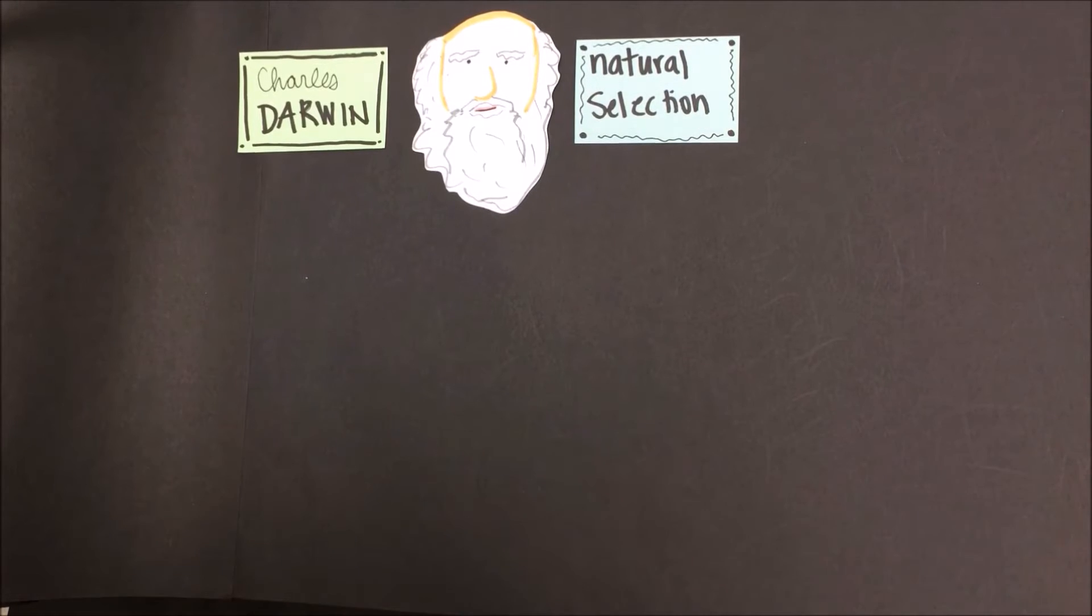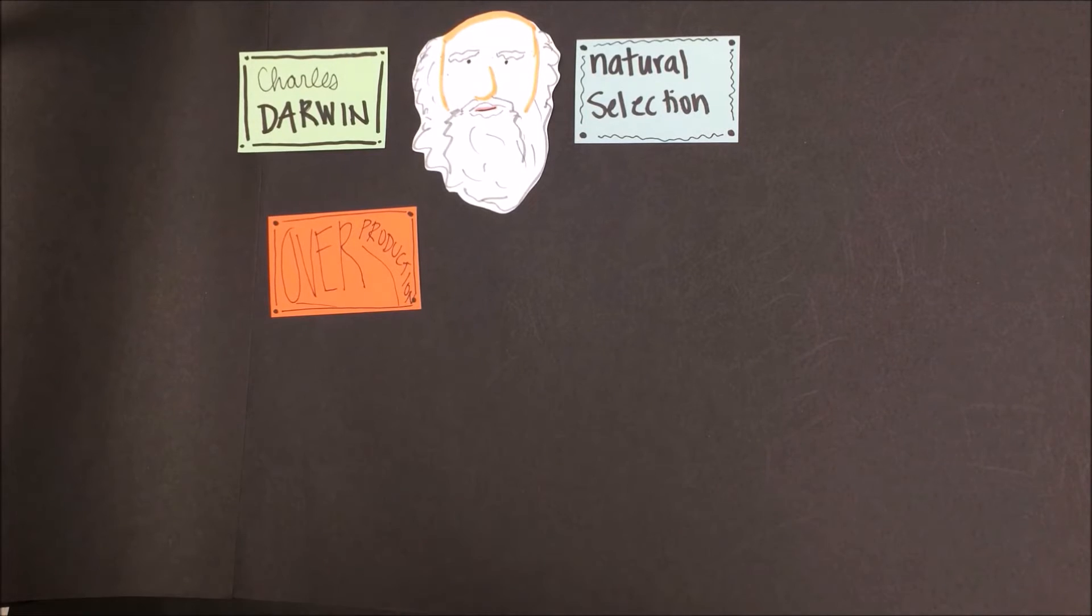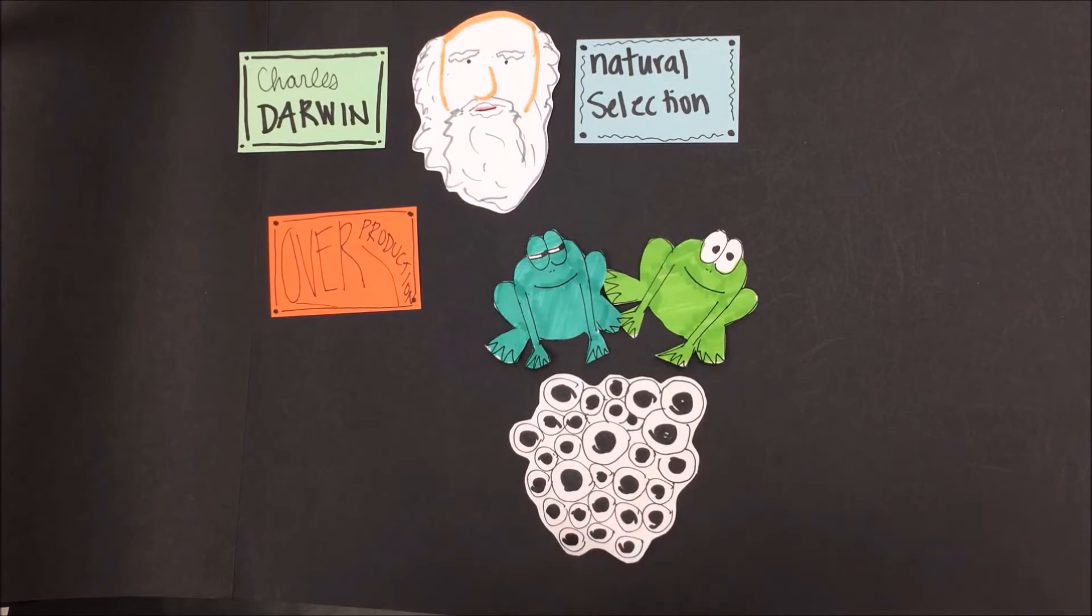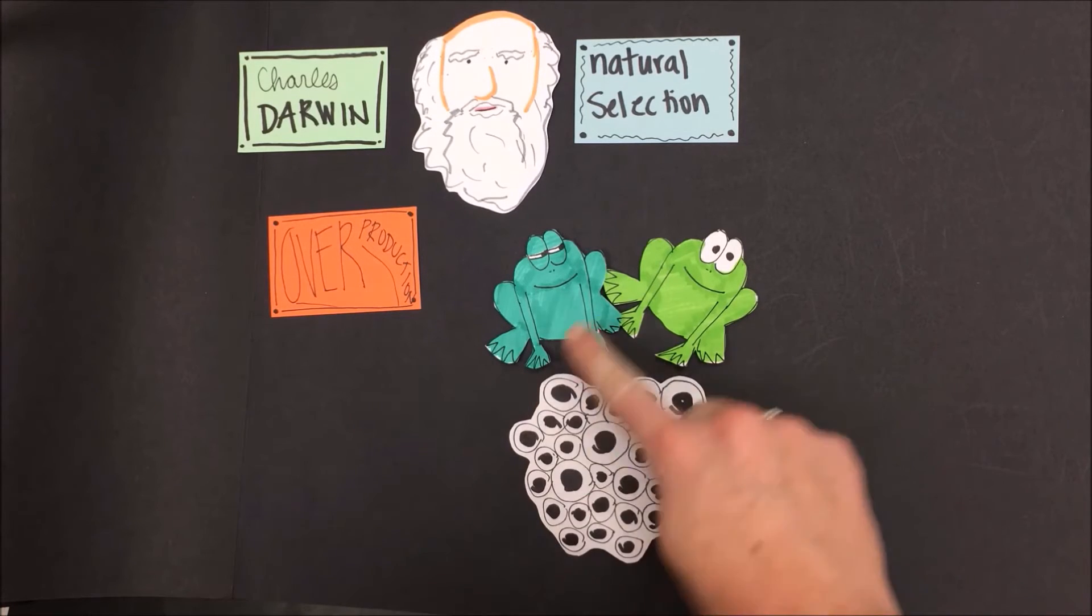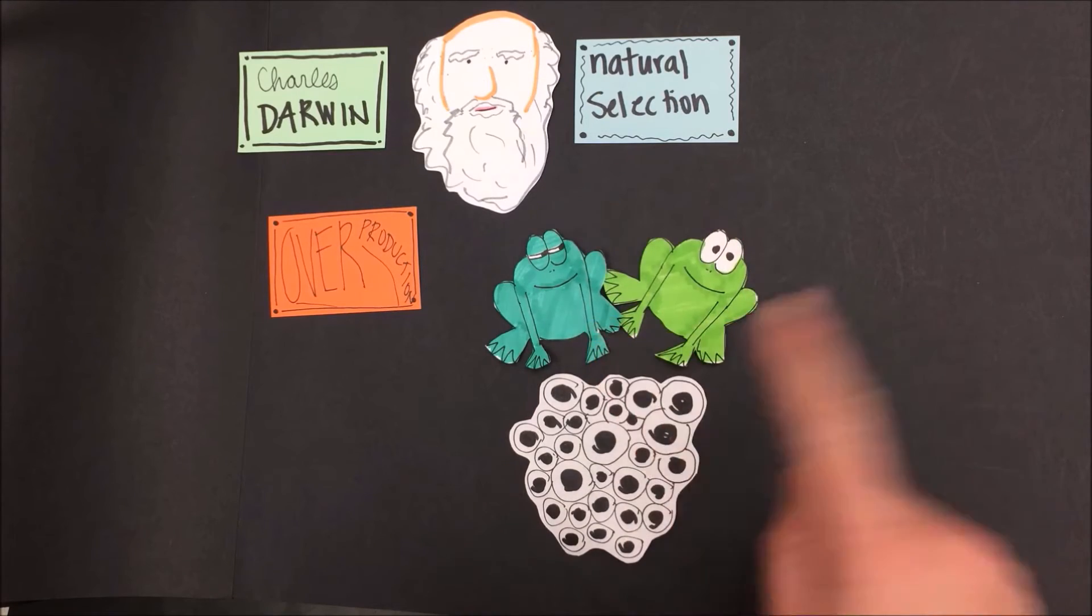The first step in Darwin's theory of natural selection is called overproduction. Overproduction states that more offspring will be born than will survive to reproductive age themselves. In our example, let's say that there are two frogs that have a bunch of eggs. Not all of these eggs will hatch, not all of the hatched tadpoles will turn into frogs, and not all of those frogs will lay eggs of their own. Thus, there's overproduction. More eggs or offspring than will grow up to be reproductively capable adults.